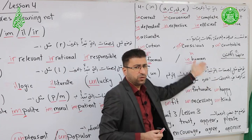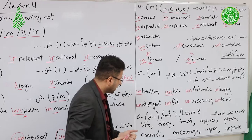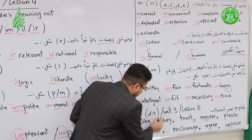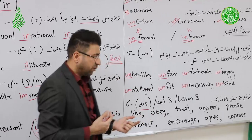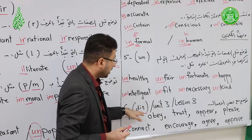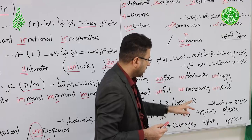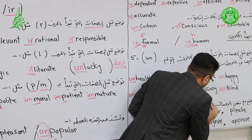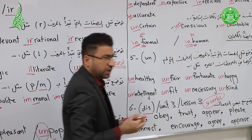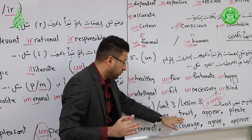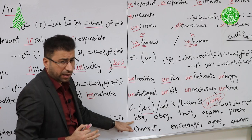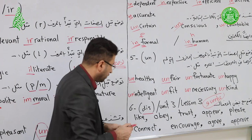Note number six: the prefix DIS. This appears in Unit 3 Lesson 3, but since it is also a prefix, we include it today. DIS is placed before certain verbs — nine specific verbs — to give the meaning of negation. These nine verbs must be memorized.